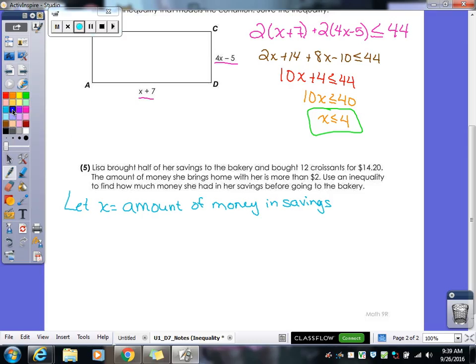Now when she went to the bakery though, how much of it did she bring with her? Half. So we're going to start with one half X. Because X was all of her money in her savings. She only brought half of it though. And then she bought her 12 croissants for $14.20. So we want to subtract that, minus $14.20. The amount of money she brings home with her is more than $2. So this one would be a greater than 2. Is it going to be equal to 2? No. They said she brought home more than $2, not $2. There we go. There's our inequality. We need to solve it now.